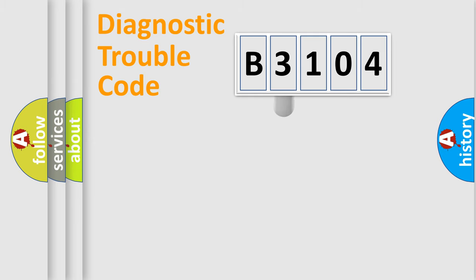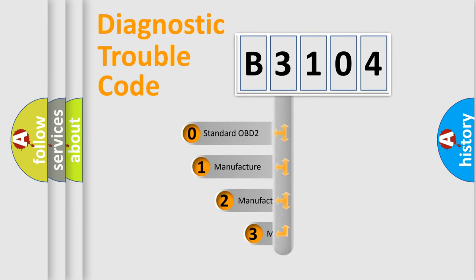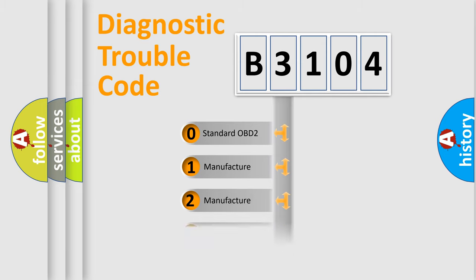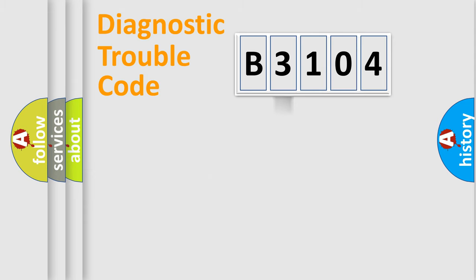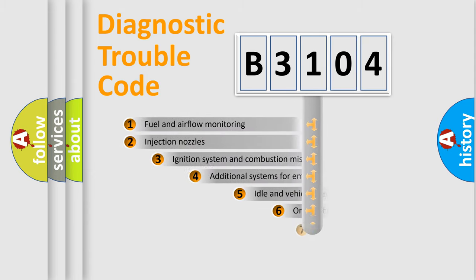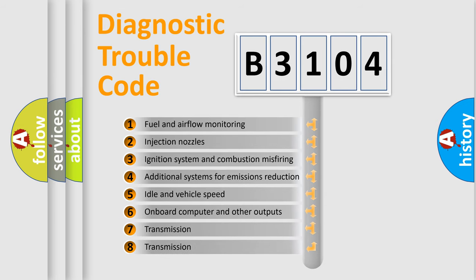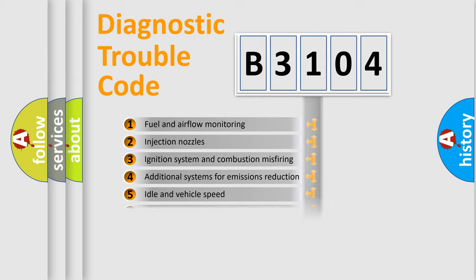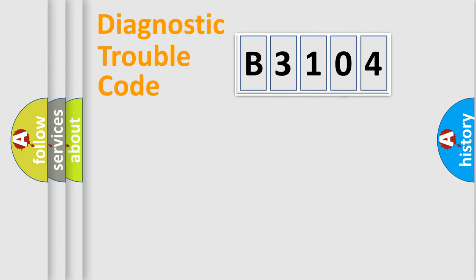This distribution is defined in the first character of the code. If the second character is expressed as zero, it is a standardized error. In the case of numbers 1, 2, or 3, it is a more manufacturer-specific expression of the error. The third character specifies a subset of errors. The distribution shown is valid only for the standardized DTC code.